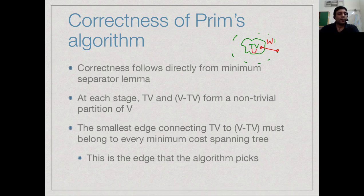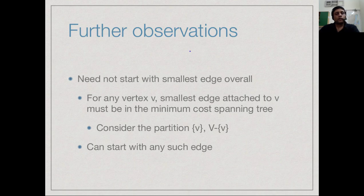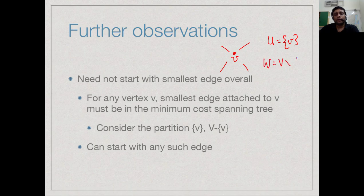The lemma also lets us relax the algorithm slightly. If we take any single vertex and let U be just that vertex and W be everything else, the smallest edge out of that vertex must be in every spanning tree. So we can start Prim's algorithm at any vertex and begin with the smallest edge attached to it, rather than having to find the globally minimum cost edge first.